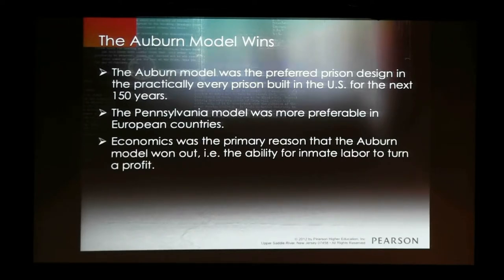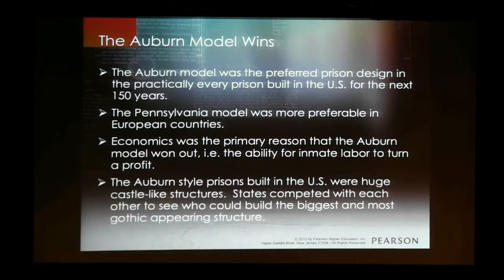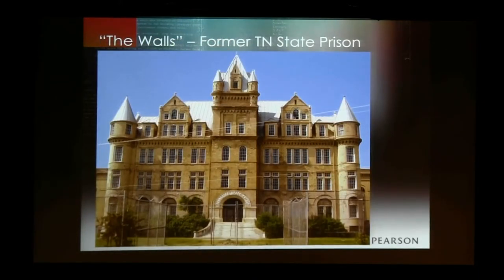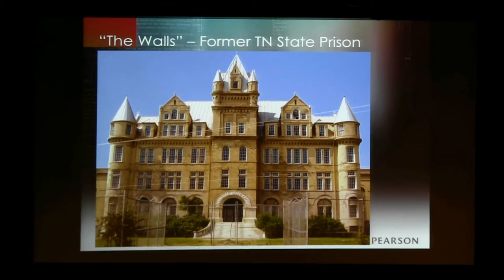Economics drove the adoption of the Auburn style. The biggest selling feature was that we could turn a profit through inmate labor. States started competing to build the most large Gothic-looking Auburn-style prisons — it became a contest to see who could build the most castle-like structure. Tennessee had a notable entry. The look was intentional: when you walked into that huge Gothic structure, you felt small. The goal was for you to symbolically recognize that this institution was bigger than you.